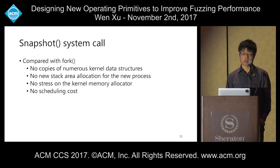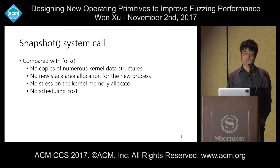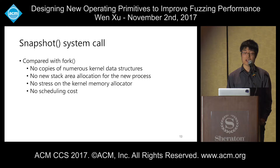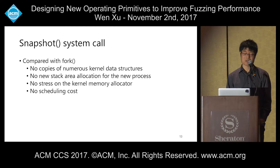Compared with fork or other process-spawning primitives, the snapshot system call does not copy numerous kernel data structures. Unlike fork or pthread_create, we do not allocate a new stack area for a new process, we do not stress the kernel memory allocator, and — most importantly — there is no process created each time, so there is no scheduling cost.